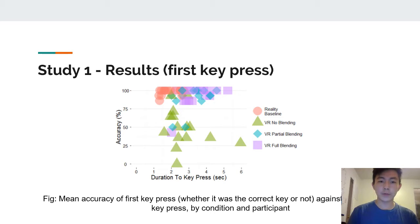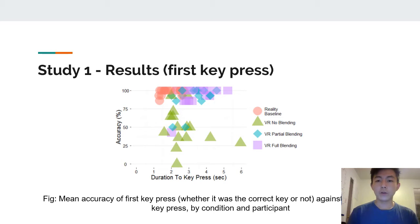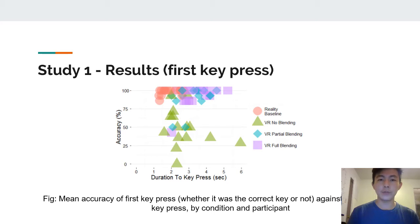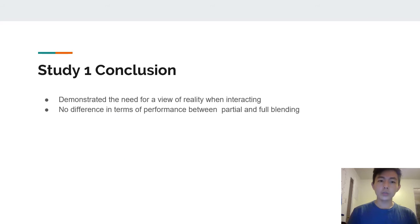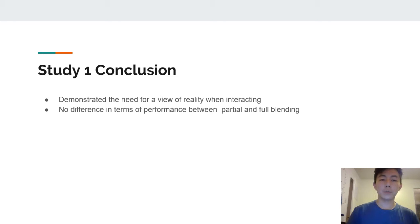From the findings of the experiment, there was 100% accuracy for the first key press in under two seconds for the reality baseline. For VR with no blending, users took an equal amount of time but with relatively low accuracy, because they needed to first find the correct placement of their hand on the keyboard. For the partial and full blending conditions, although accuracy was relatively high, the duration to key press was slower due to latency from graphics rendering. The conclusion was that when reality was incorporated into the virtual view, it helped users perform better with the physical keyboard, and there was no performance difference between partial and full blending.